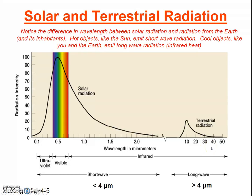Notably, infrared radiation is basically heat. So from now on, we're going to talk about solar radiation as shortwave radiation — this is the radiation from the Sun. And when we talk about longwave radiation, we're talking about the radiation from the Earth. The Sun emits shortwave, and the Earth emits longwave.